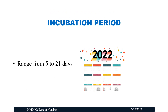The incubation period of monkeypox ranges from 5 to 21 days. The incubation period means the duration from when the microorganism enters the body until signs and symptoms appear. So for monkeypox, it takes 5 to 21 days.